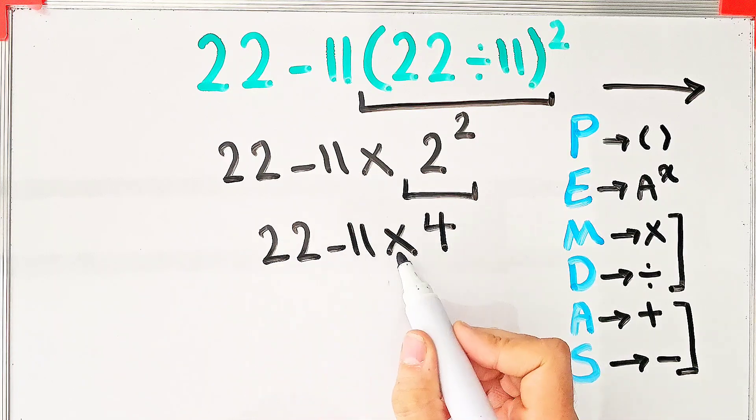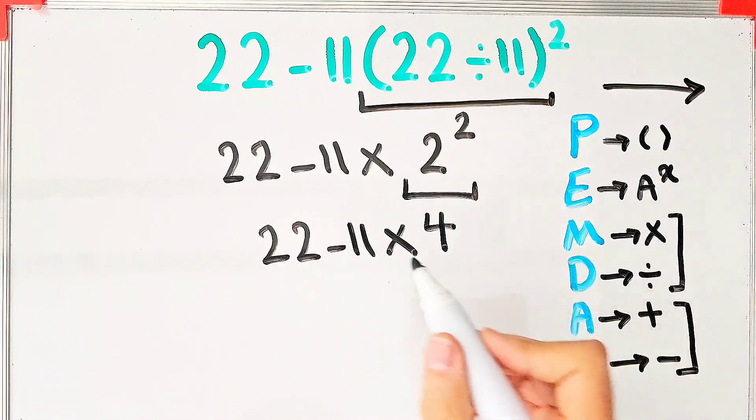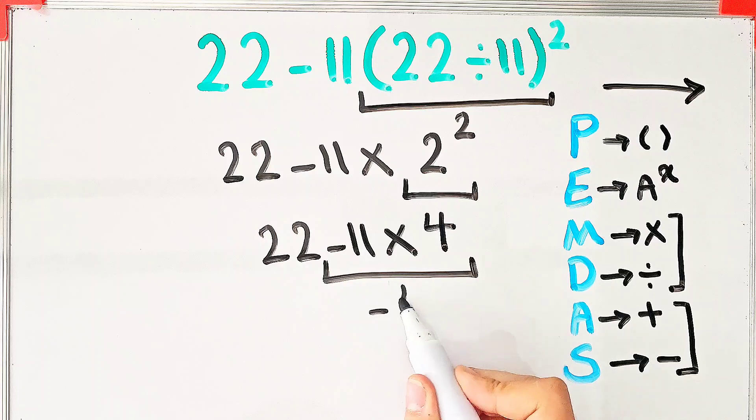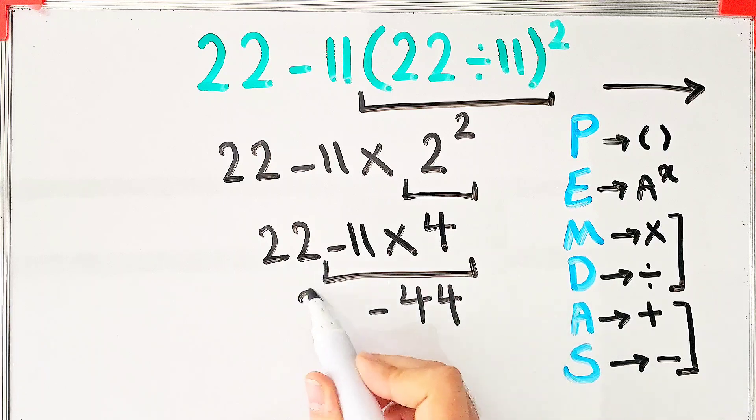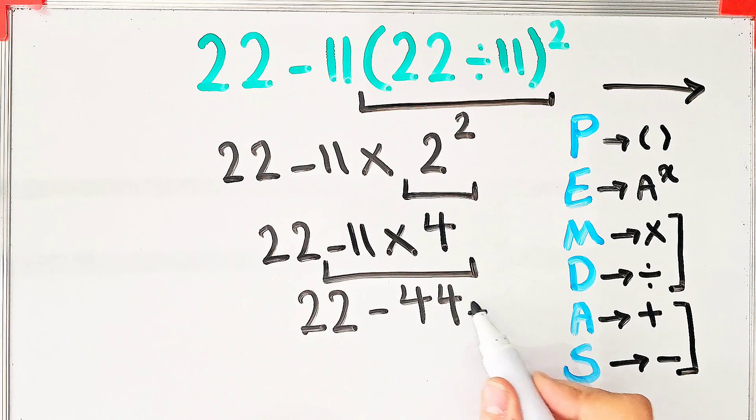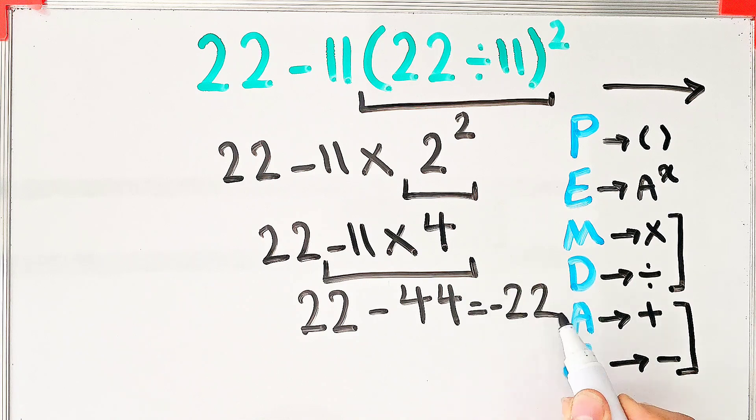In this step we do this multiplication because the multiplication has higher priority than subtraction. Negative 11 times 4 equals negative 44, and 22 minus 44 equals negative 22. Thanks for watching guys.